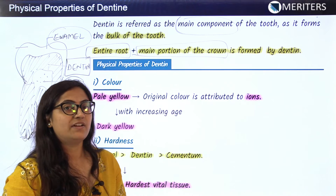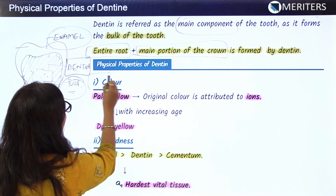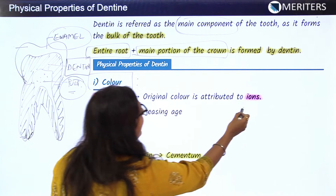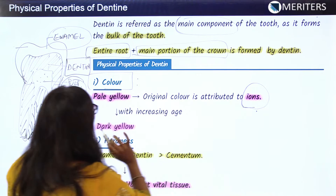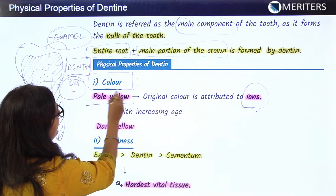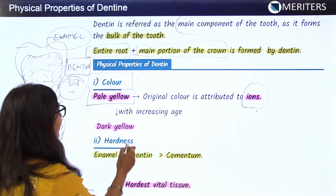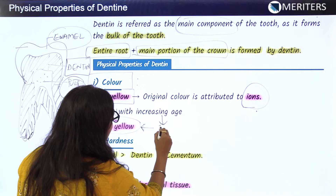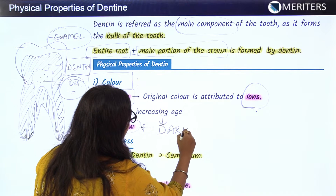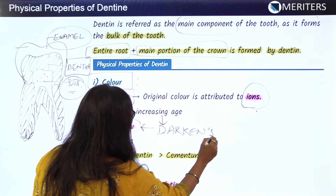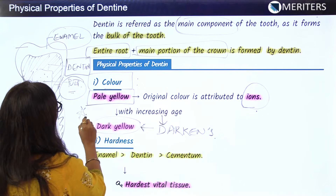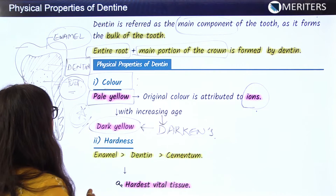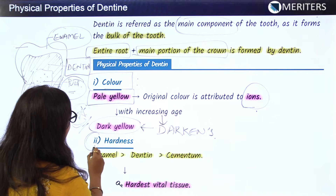The first physical property of dentine is color. Color is attributed to the ions present in the dentine. It is usually pale yellow, but with increasing age it darkens to a dark yellow color. This is an important point to note for MCQs.